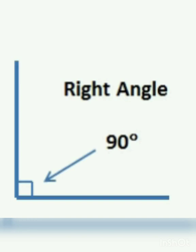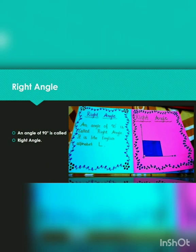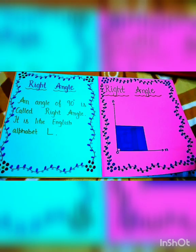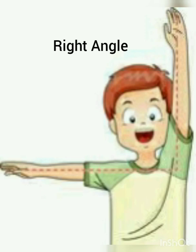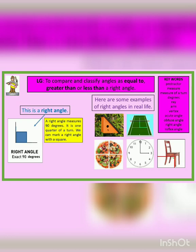The next one is right angle. An angle of 90 degrees is called a right angle. It is like the English alphabet L. In this diagram, the boy is making a right angle. Here are a few examples of right angle: the legs of a chair, the wall clock, the stadium, and pizza slices.